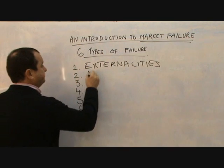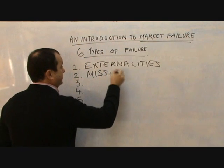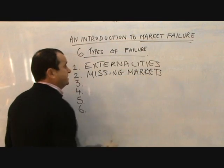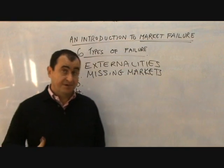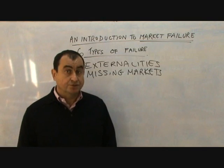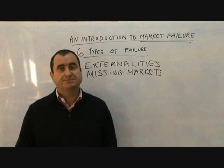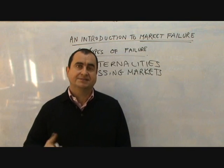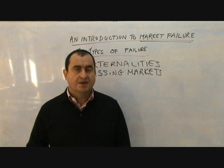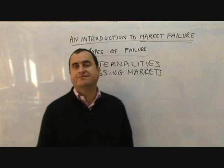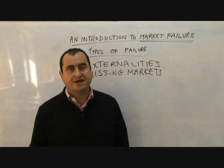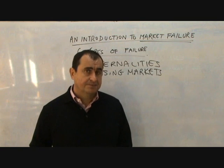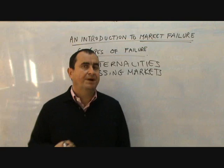Secondly, we have missing markets. If we left certain markets to the market mechanism — the price mechanism — certain goods would never be produced, because everybody would be waiting for someone else to buy and supply the product. An example might be the light given from lighthouses, or a fireworks display, or traffic lights, or street lights. All of these goods are what we call public goods.